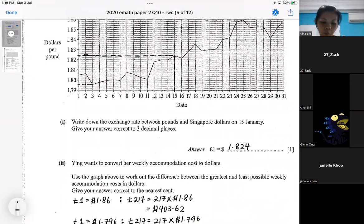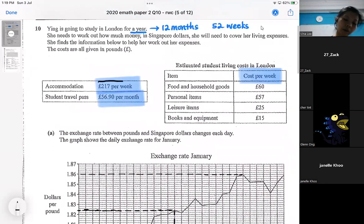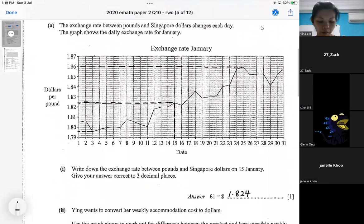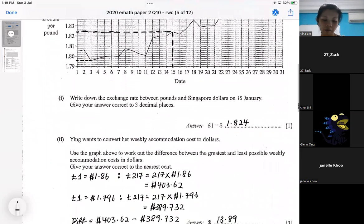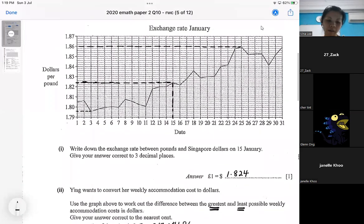Then part one is a simple reading. Part two is for you to convert the weekly accommodation to dollars. So her weekly accommodation is quite easy. Weekly accommodation is in pounds, and she's supposed to convert. But because we do not know the exchange rate, you actually got to create, use the relevant exchange rate to find out the greatest possible, that means the most expensive possible weekly accommodation or the least expensive one.